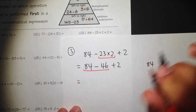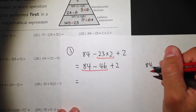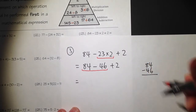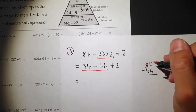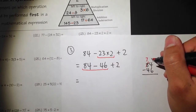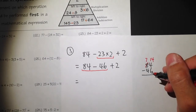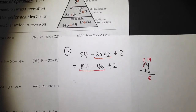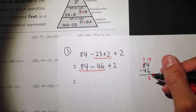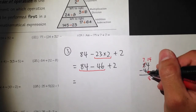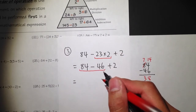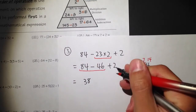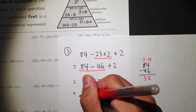Let me show you all this by hand. So 84 minus 46: 4 minus 6 doesn't work, so we have to borrow — cross out the 8 and make it 7, and make the 4 into 14. 14 minus 6 is equal to 8, and then 7 minus 4 is equal to 3. So 84 minus 46 gives us 38. Don't forget we still have the plus 2 — so lastly, we just need to do 38 plus 2, and of course that's equal to 40.